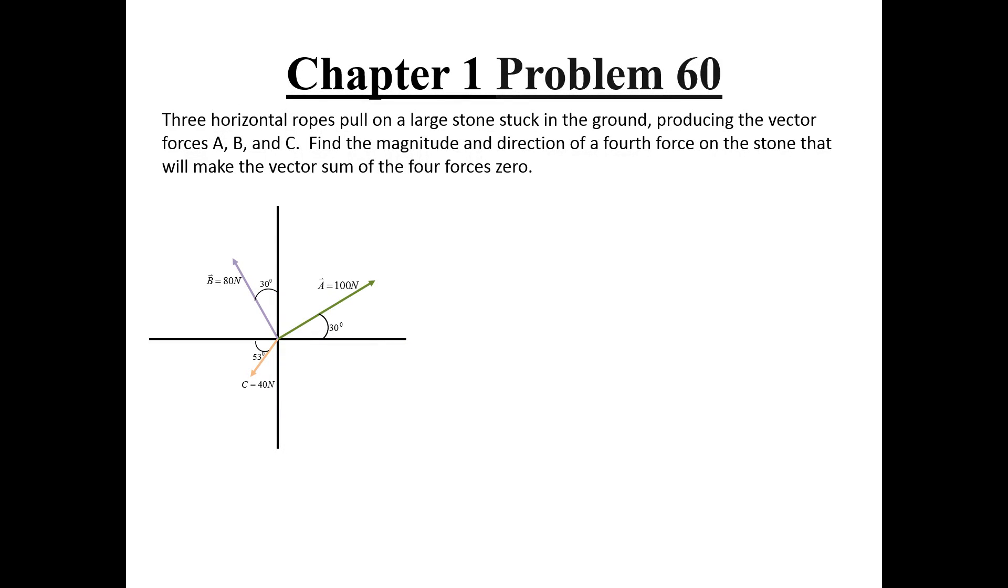This video will cover a solution guide to problem 52 from chapter 1. Three horizontal ropes pull on a large stone stuck in the ground, producing the vector forces A, B, and C. Find the magnitude and direction of a fourth force on the stone that will make the vector sum of the four forces zero.